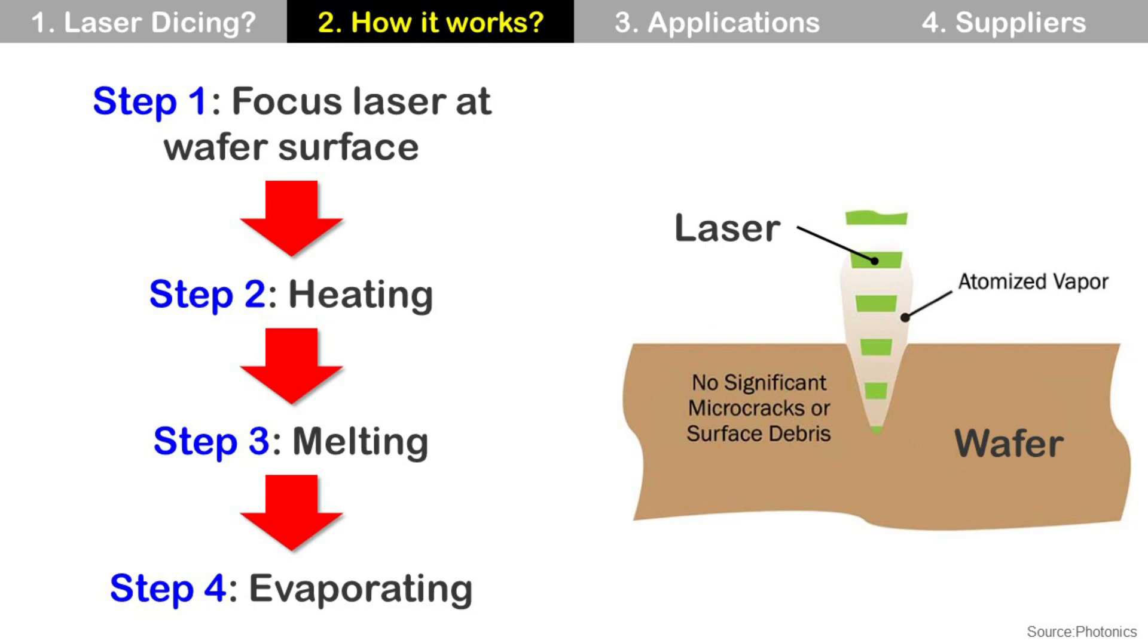Step two: laser heats up small amount of wafer at the surface. Step three: melt. So wafer is liquid state. Step four: by applying more heat by laser, molten wafer turns into vapor.